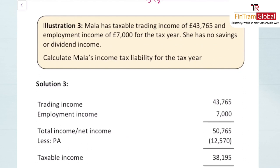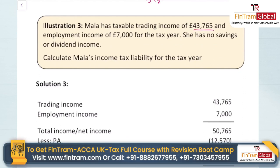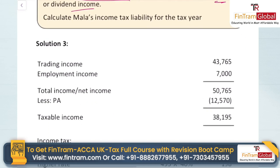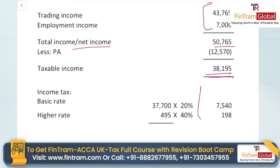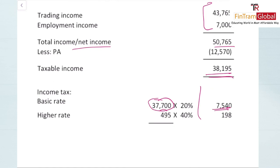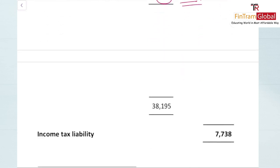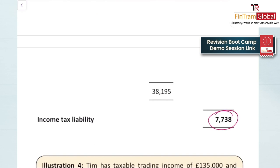Illustration: Mala has taxable trading income of £43,765 and employment income of £7,000. No savings or dividend income. Total income equals net income of £50,765. Deducting full PA gives taxable income of £38,195. The first £37,700 is taxed at 20% (£7,540) and the remaining £495 at 40% (£198), giving total income tax liability of £7,738.